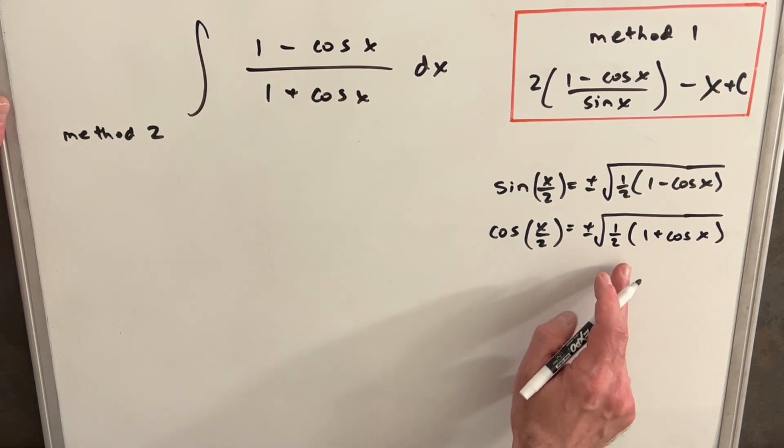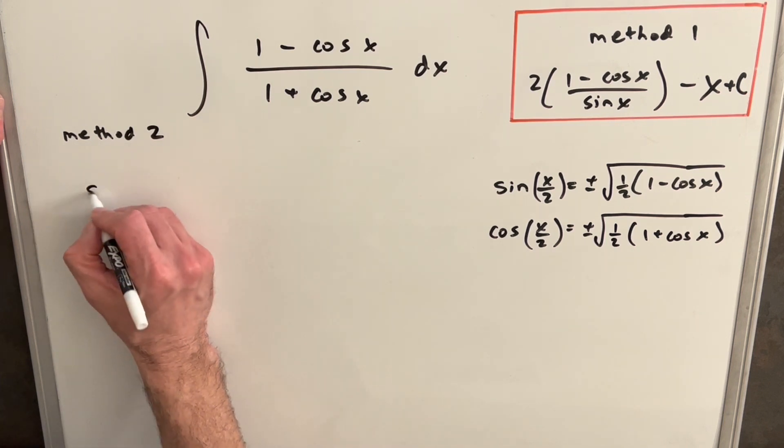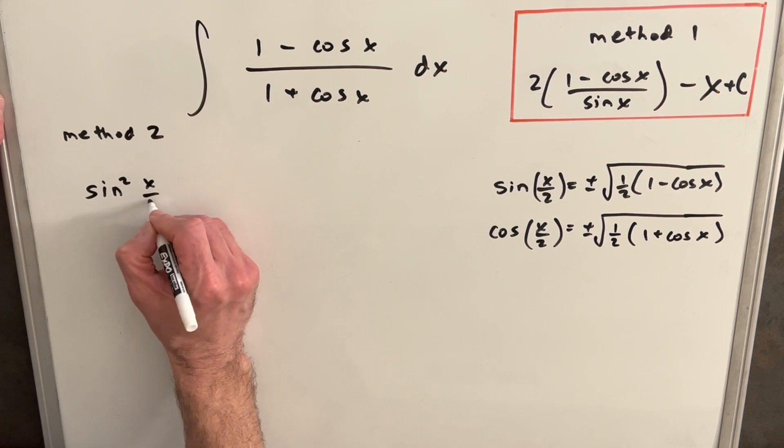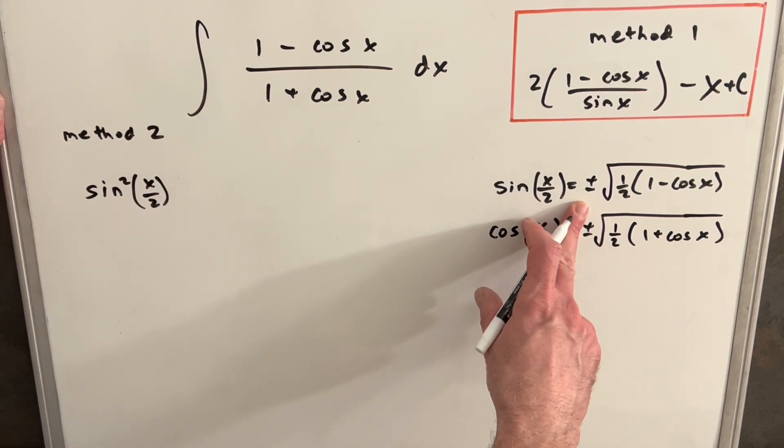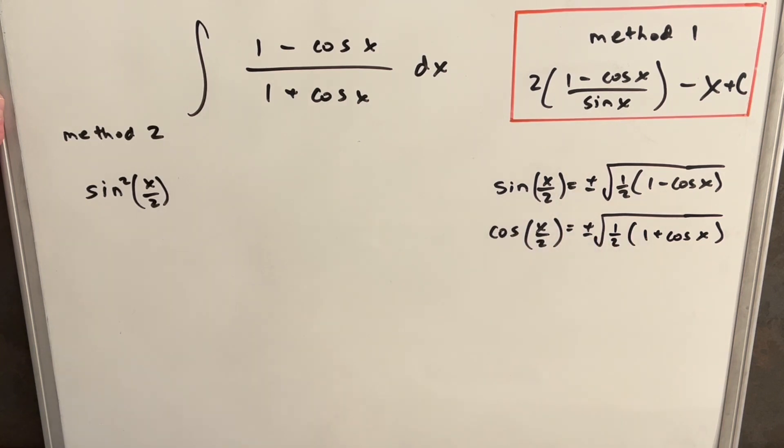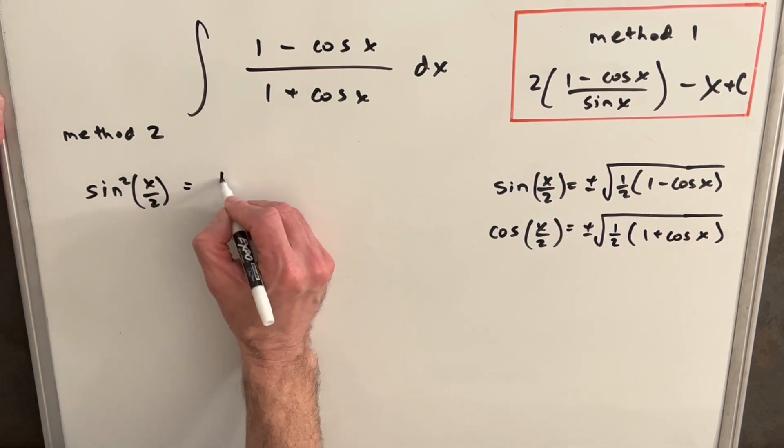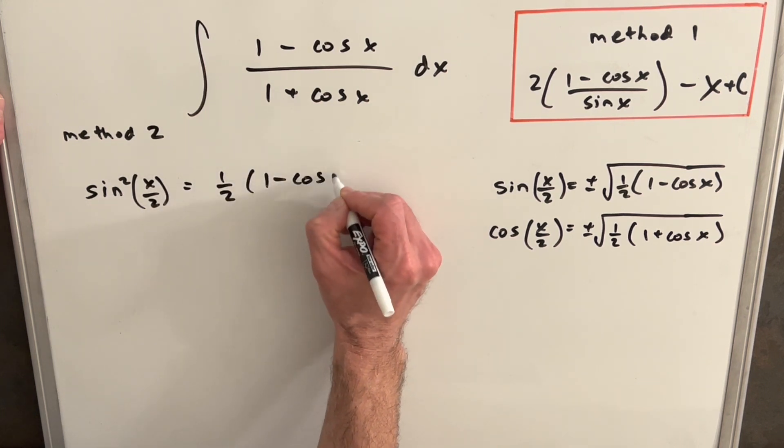So basically for method 2, I'm just going to play with these identities to get it to look like our integral. So let's see what happens. To start with, I'm going to square our half-angle formula for sine. So we'll have sin² (x/2). Now if we square that, the minus sign here is not going to matter because when we square it, it's going to become positive. But we can remove our square root, and we're just going to have ½(1 minus cos x).